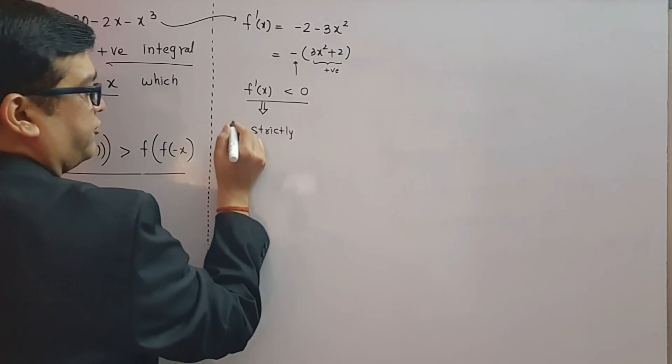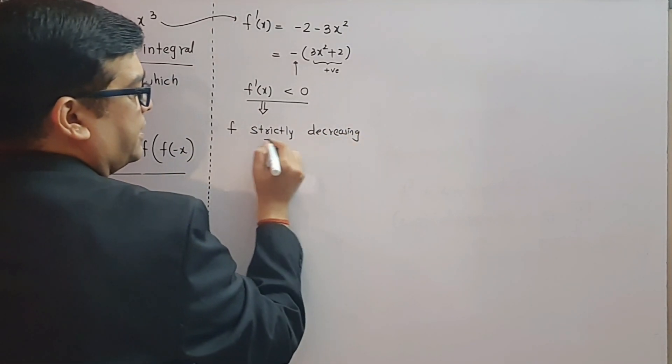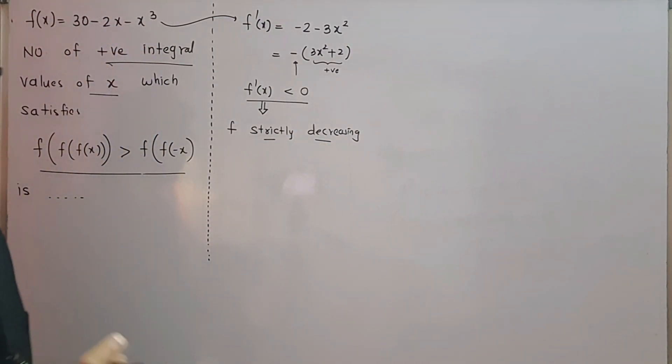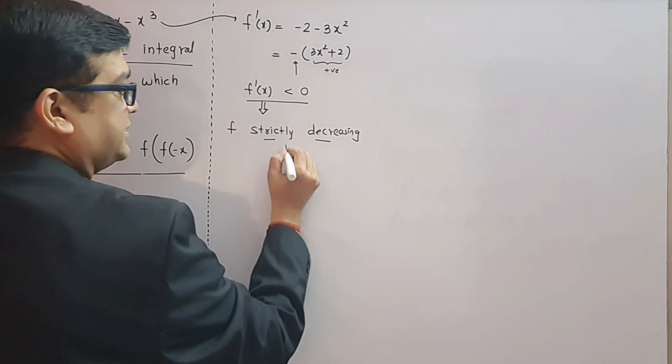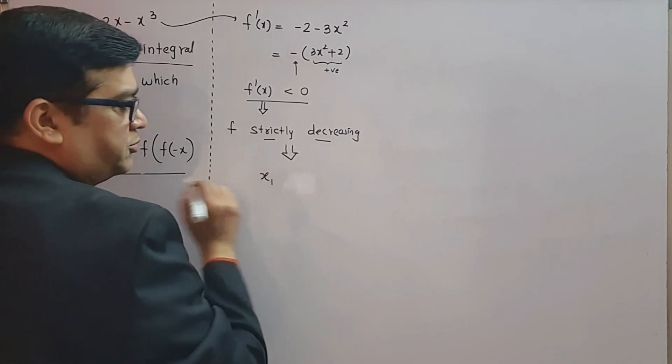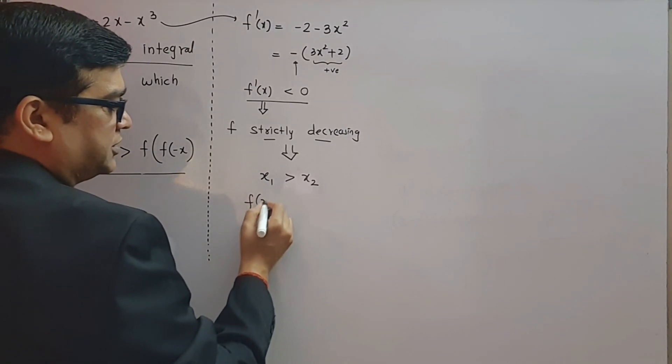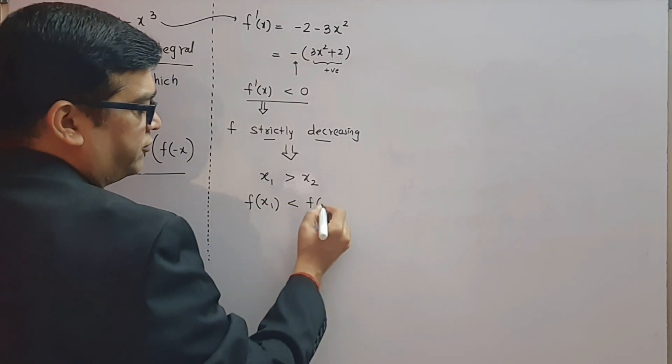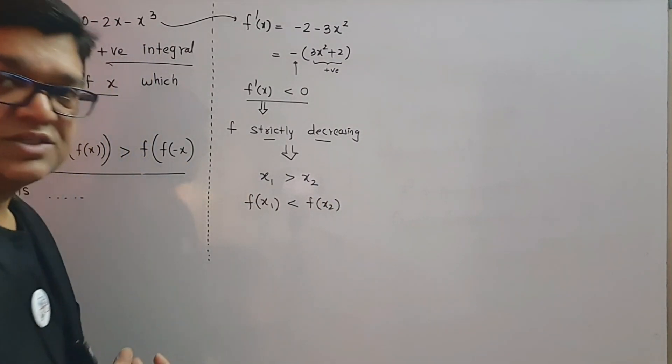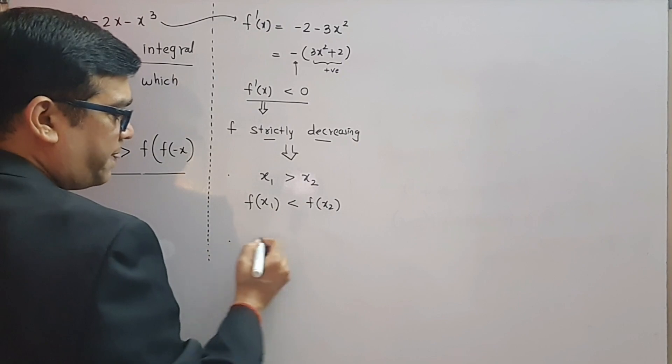If the derivative function is negative, less than 0, we can say that this particular function f is a strictly decreasing function. Now if it is strictly decreasing, what is the property of strictly decreasing function? If you say input x₁ is greater than input x₂